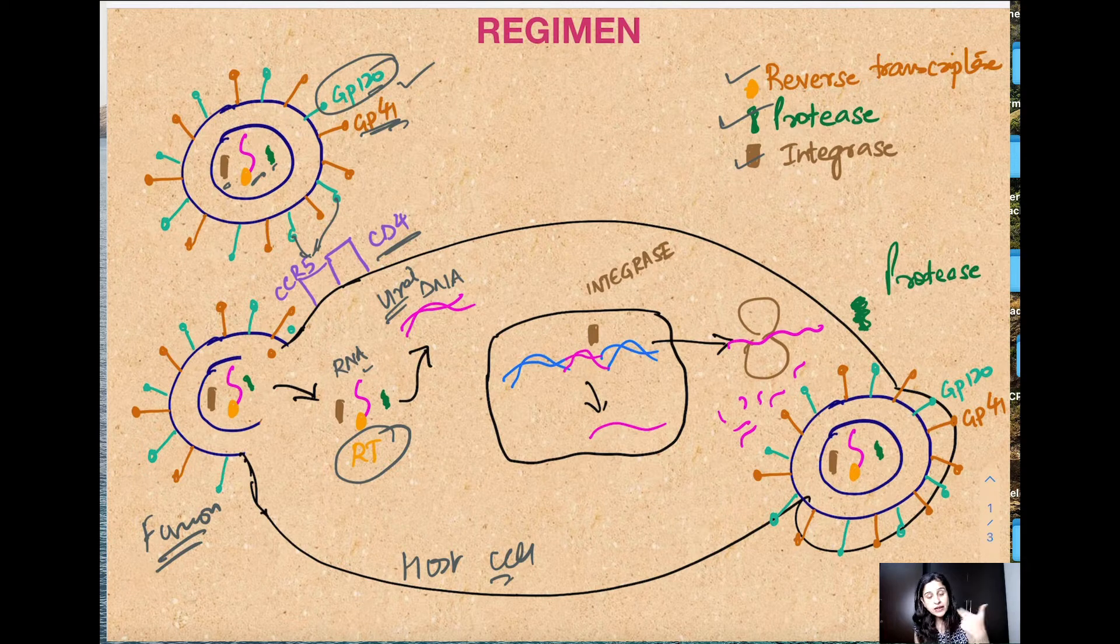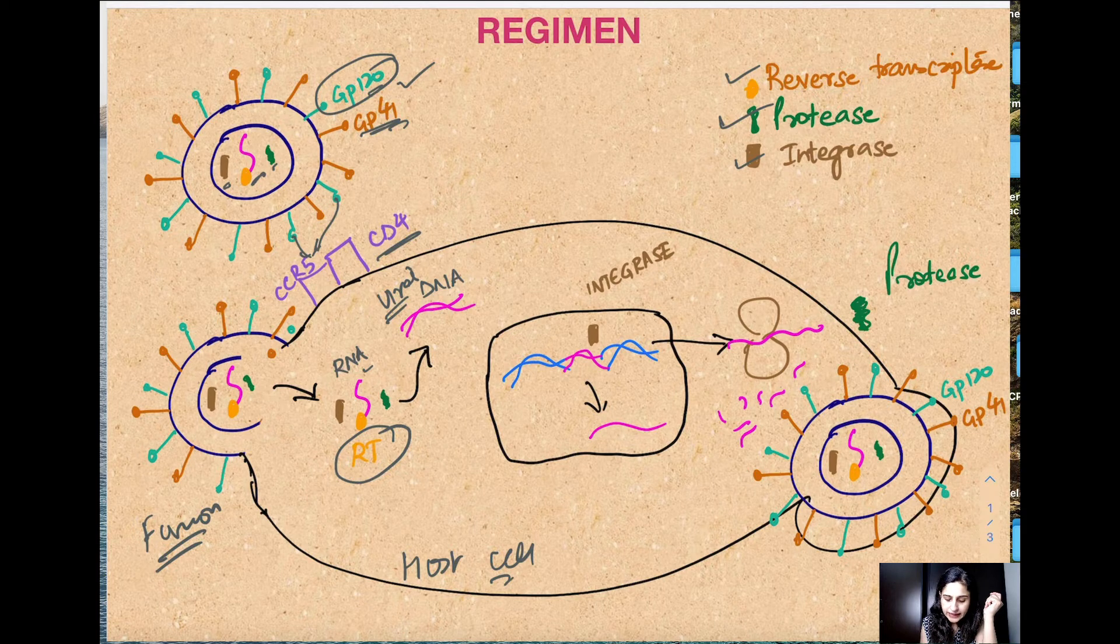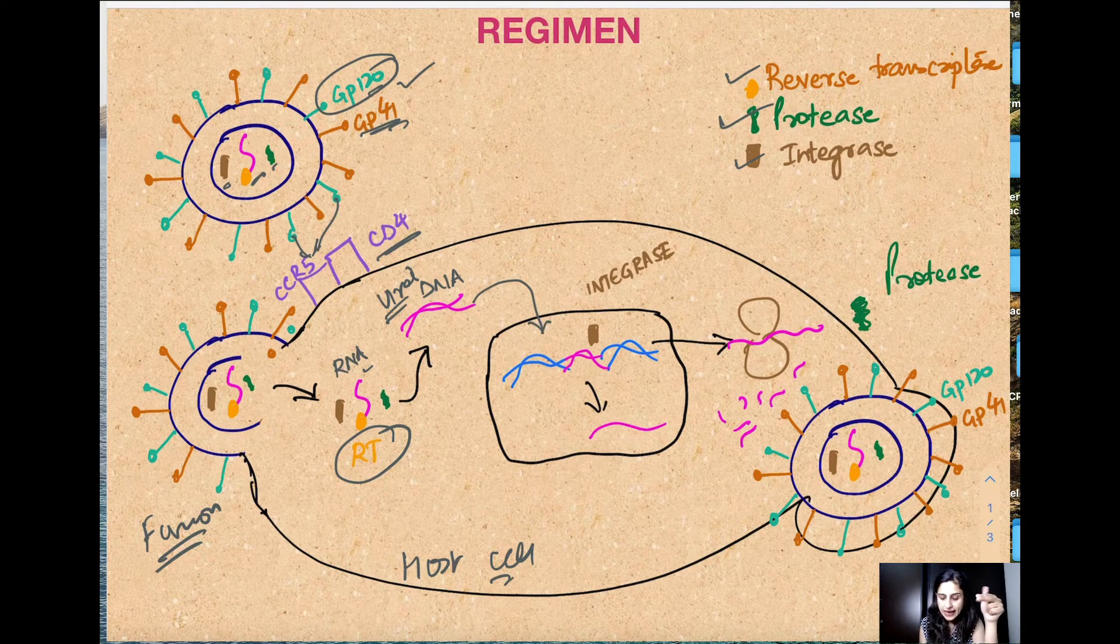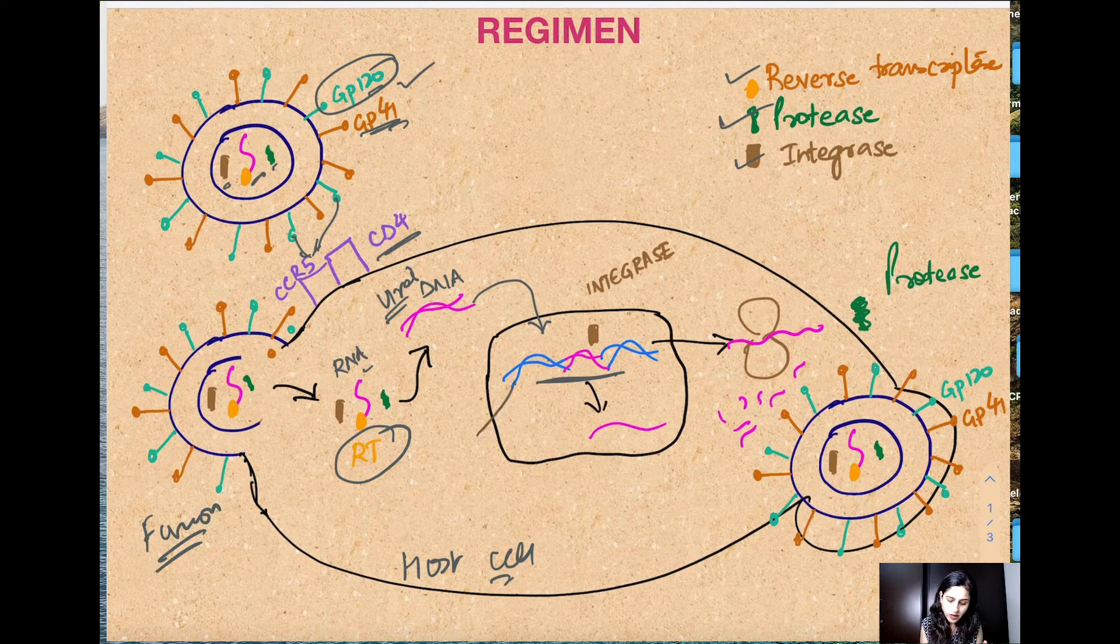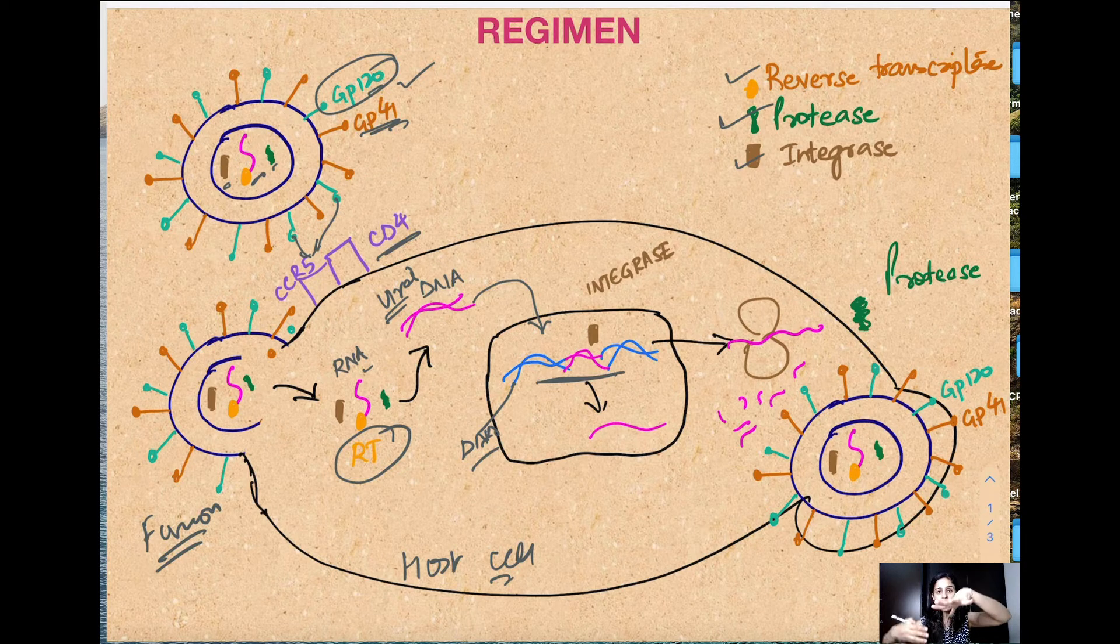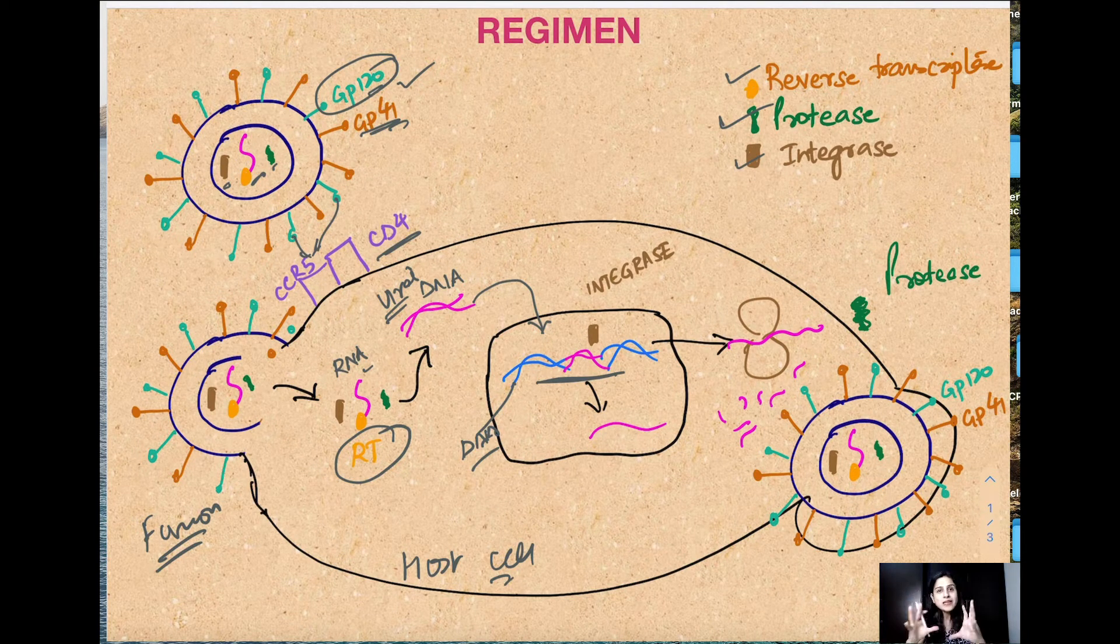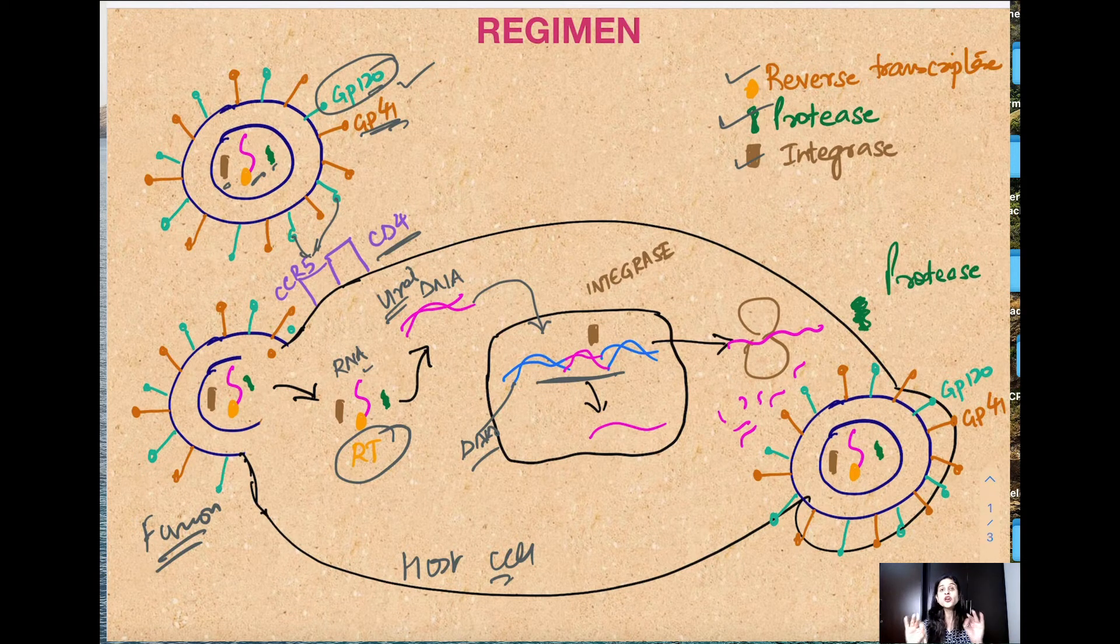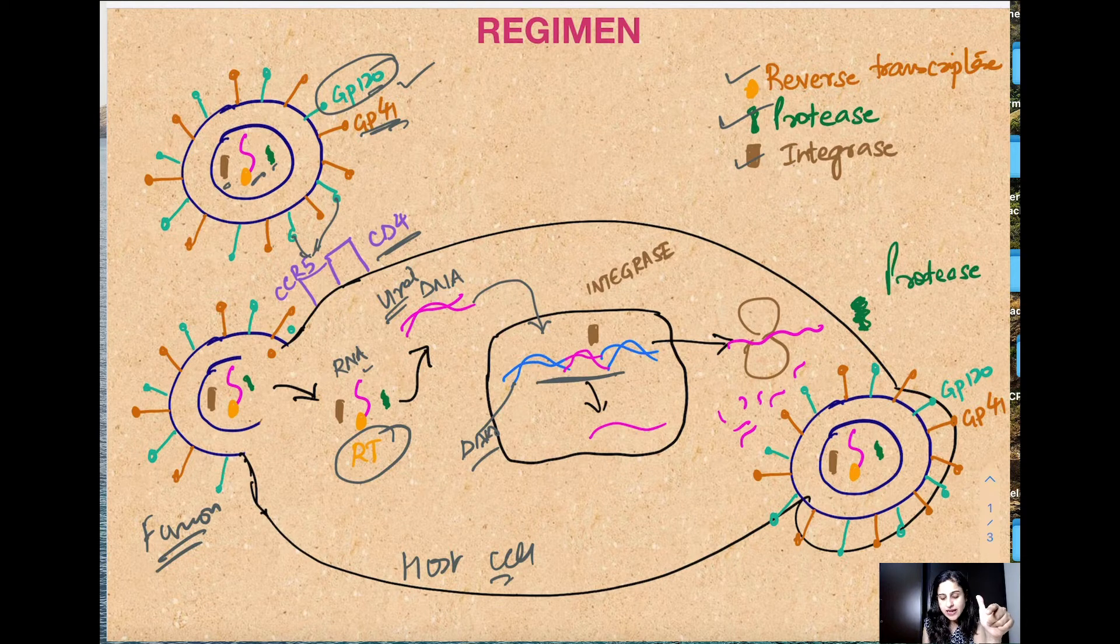Once DNA is formed, the next step is it will enter into the host nucleus. Again, with the second machinery it came with - integrase - it will integrate into the host DNA. Once this happens, this is for life. This is a permanent feature you cannot actually remove from there.